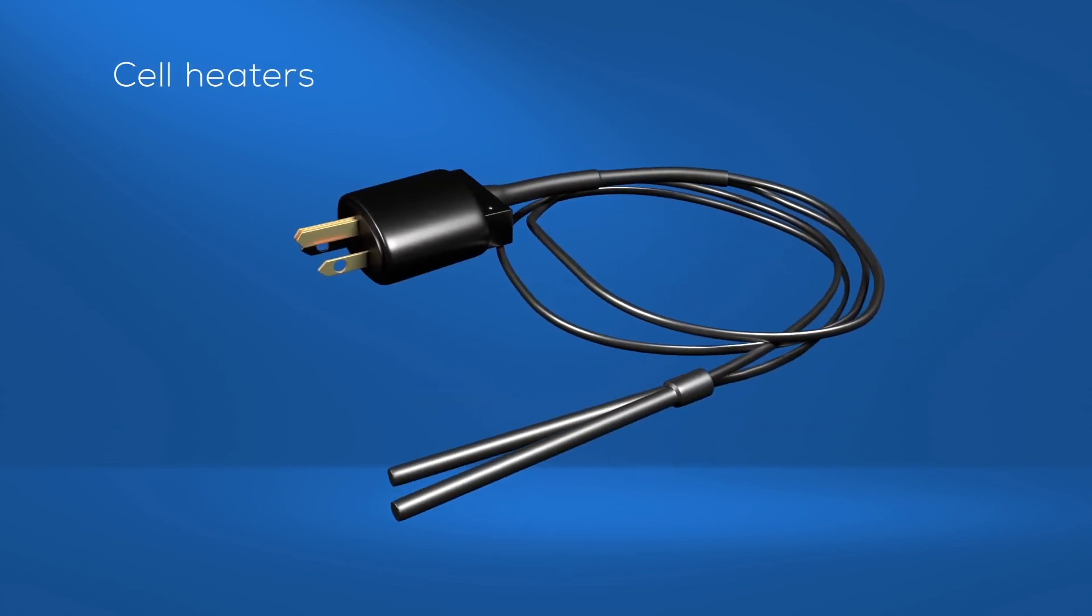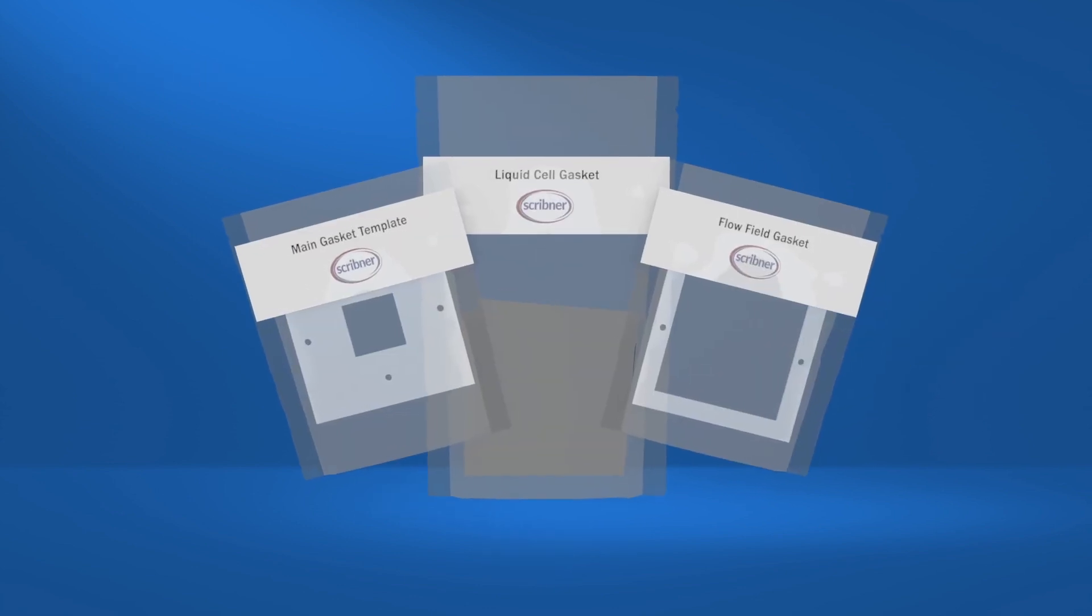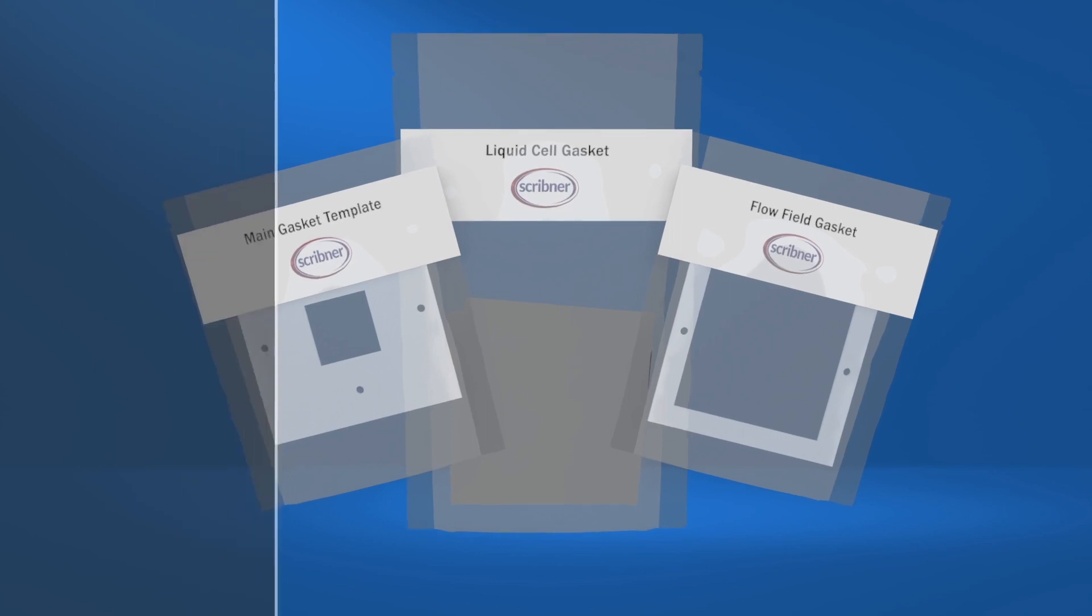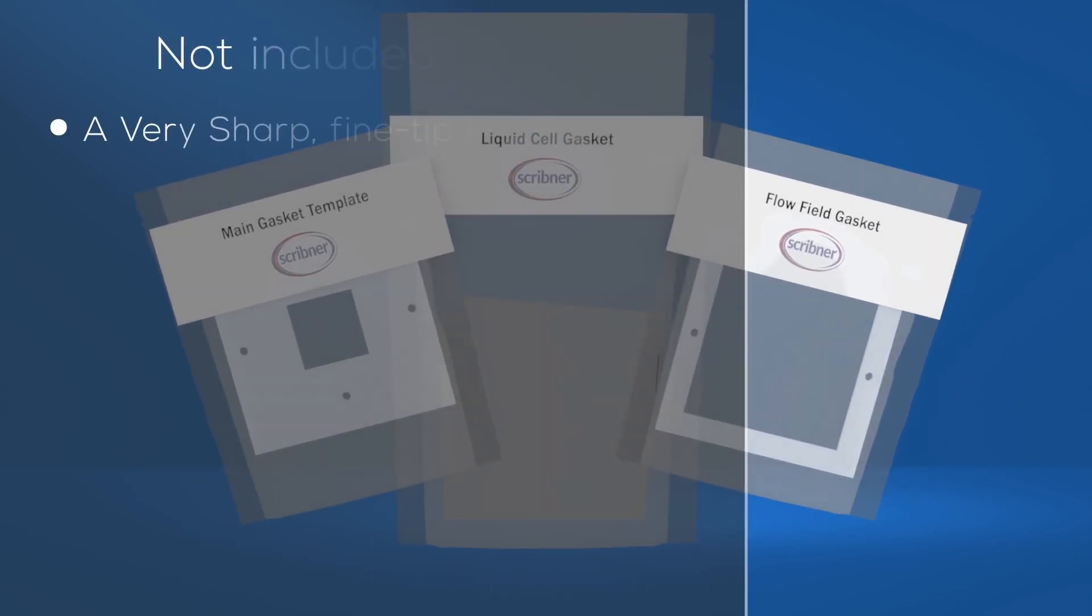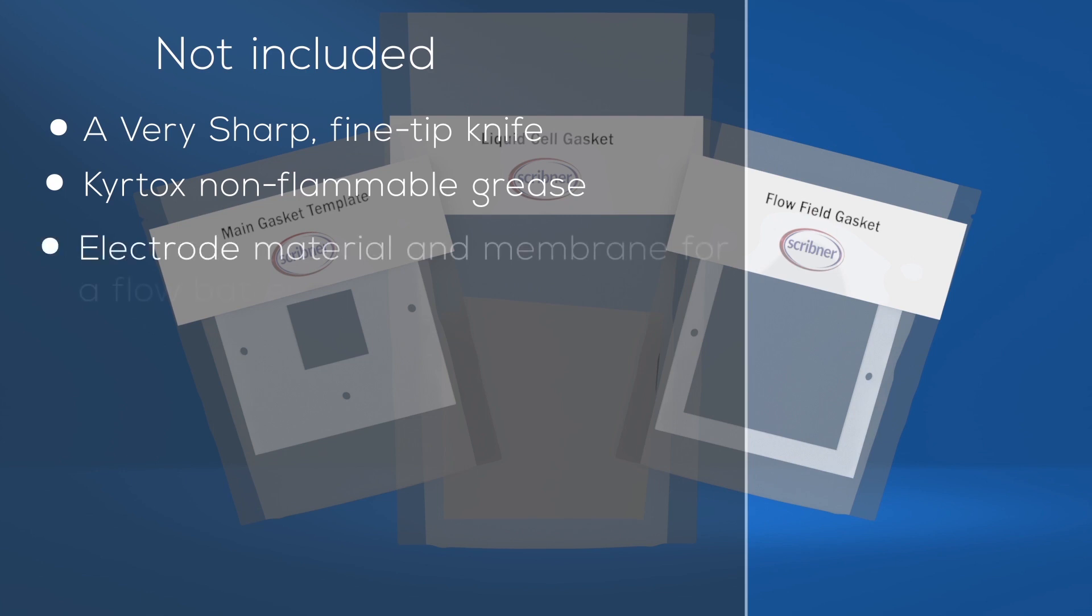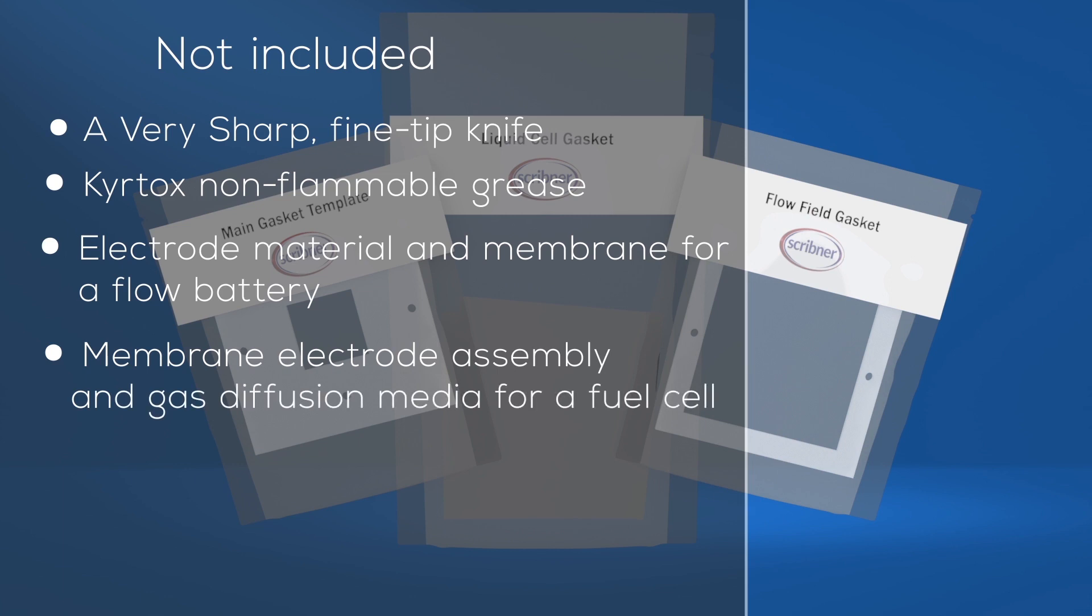Items needed to complete the assembly that are not part of the cell fixture kit include a very sharp fine tip knife, Krytox non-flammable grease, electrode material and membrane for a flow battery, or membrane electrode assembly and gas diffusion media for a fuel cell, and a torque wrench with a 7/16 inch or 11 millimeter nut drive.